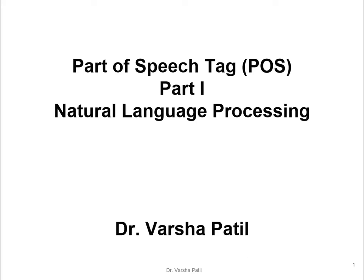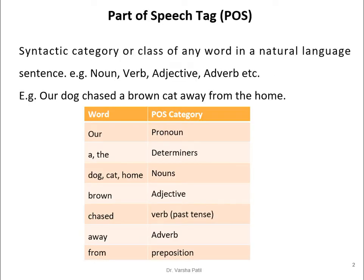Welcome to this channel. The topic is Part of Speech Tagging, Part 1. This is a basic video on the Part of Speech tag concept. What is meant by Part of Speech tag or POS? It is a syntactic category or class of any word in a natural language sentence — for example, words come under categories like noun, verb, adjective, adverb, etc.